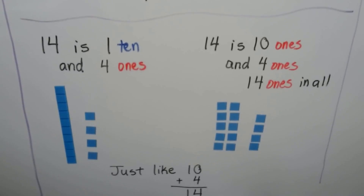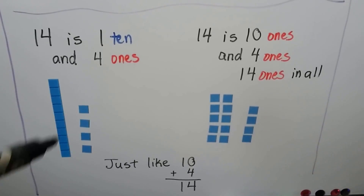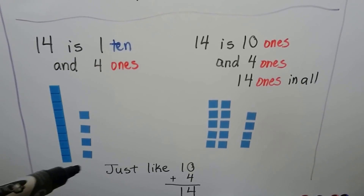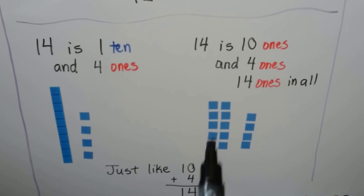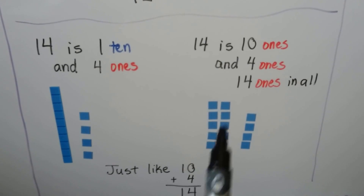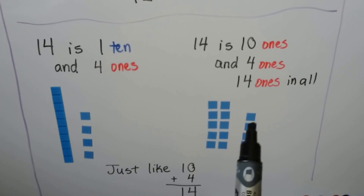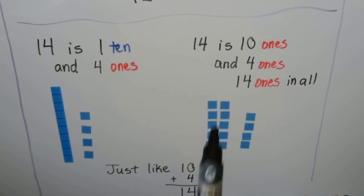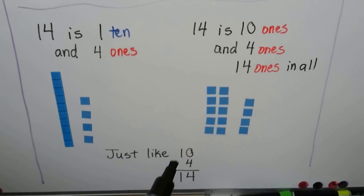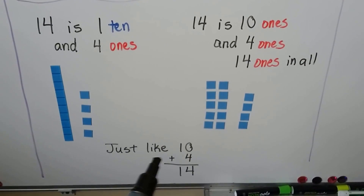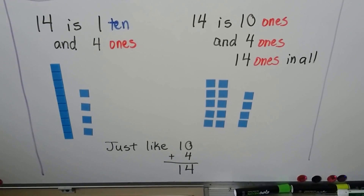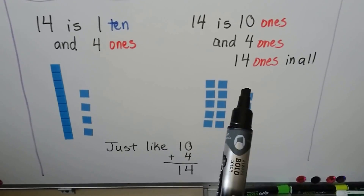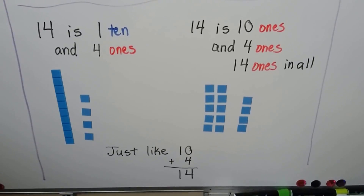14 is one 10 and four ones. It's also 10 ones and four ones, so it's 14 ones in all. Just like 10 plus 4 is equal to 14. We have 10, 11, 12, 13, 14.